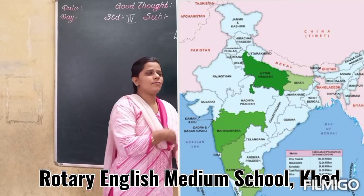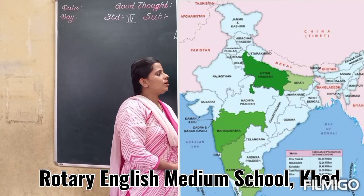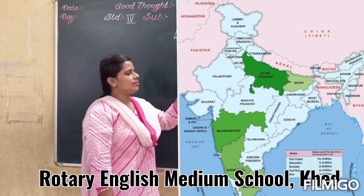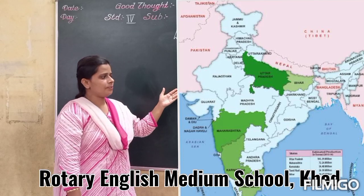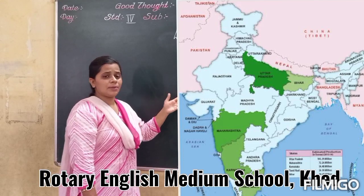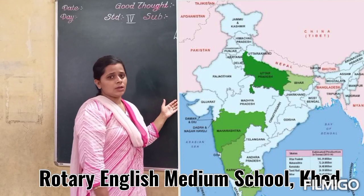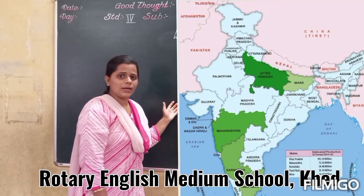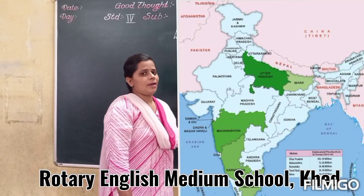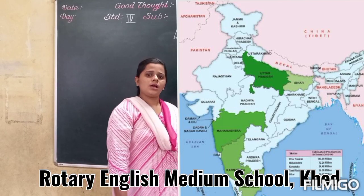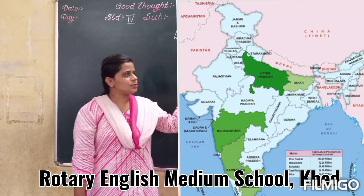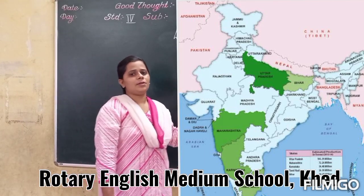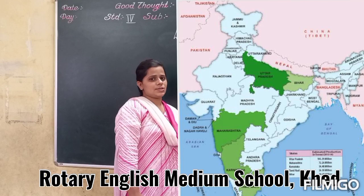After Uttar Pradesh, the other states that produce sugarcane are Maharashtra, Andhra Pradesh, Tamil Nadu, Karnataka, etc. Sugarcane production is followed by these remaining states.